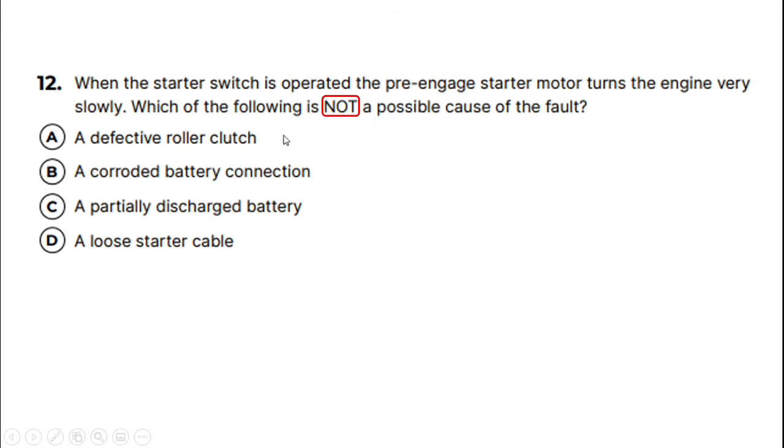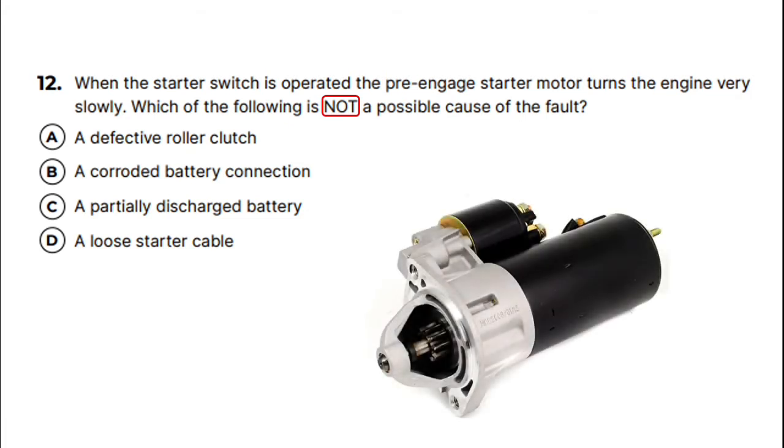The first option is a defective roller clutch, and that's on the starter motor. I'm just going to bring in an image. So this pinion gear here that engages with the flywheel has a one-way clutch. Now if that is defective, it would do one of two things - the engine either wouldn't turn at all because there would be no drive coming from this, or it would turn but it wouldn't turn slowly just because the clutch itself doesn't influence the speed at which the motor turns. So we can pretty much say that that is not a cause of the fault, but let's just check the other answers.